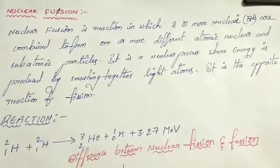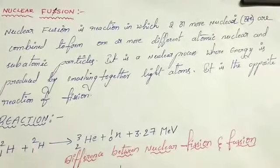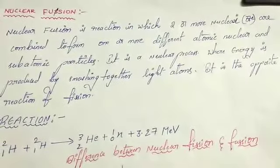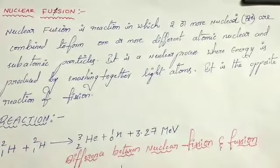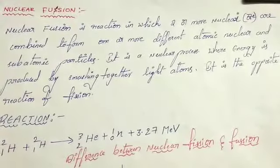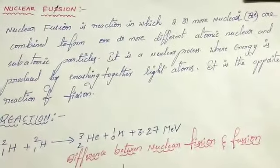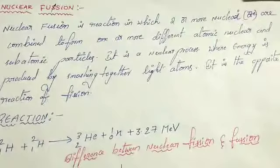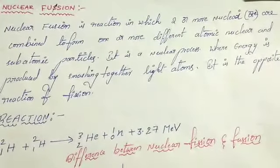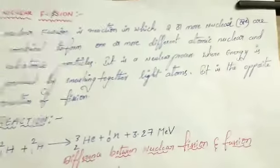Finally, in nuclear energy, by these two processes — the nuclear fission process and nuclear fusion process — we can get energy. From nuclear fusion, we can get electricity from the sun. In nuclear fission, we can get electricity from the nuclear reactor.